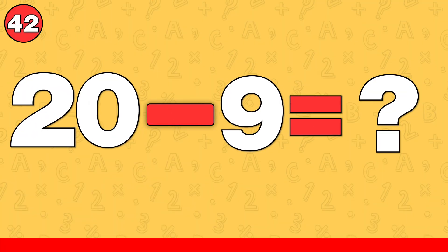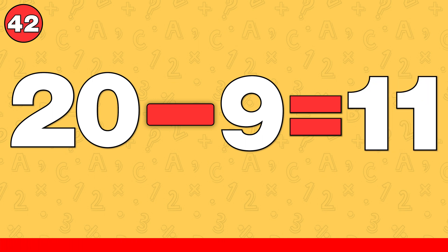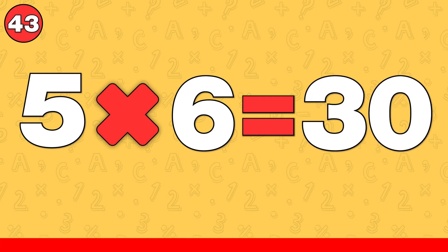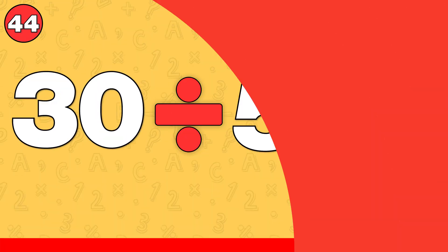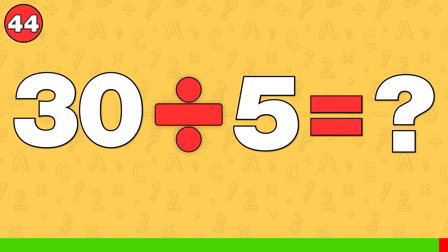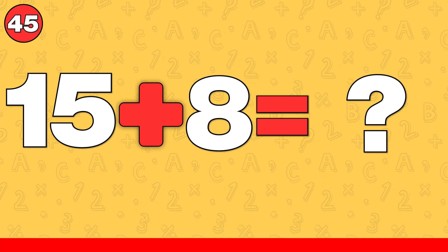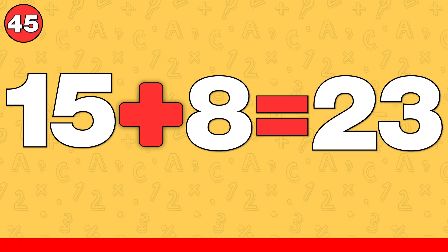20 minus 9. The answer is 11. 5 times 6. The answer is 30. 30 divided by 5. The answer is 6. 15 plus 8. The answer is 23.